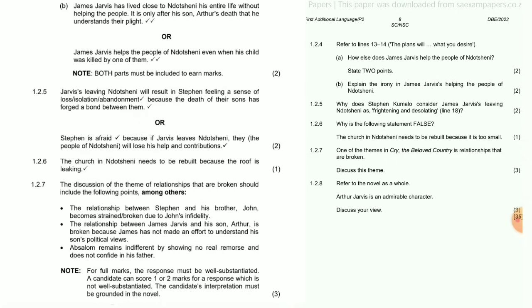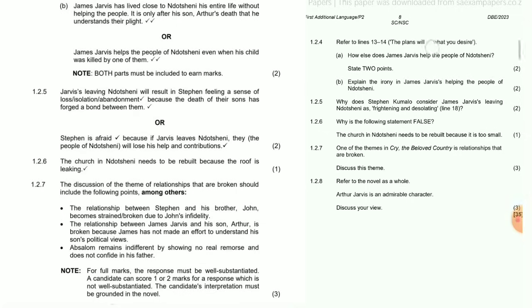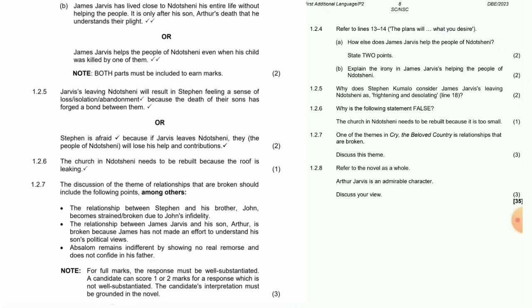Question 1.2.7: One of the themes in Cry the Beloved Country is relationships that are broken — discuss the theme. The relationship between Stephen and his brother John becomes strained and broken due to John's infidelity. The relationship between James Jovis and his son Otter is broken because James has not made an effort to understand his son's political views. Absalom remains indifferent and does not confide in his father.